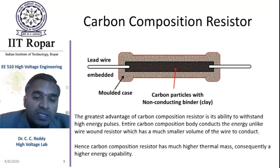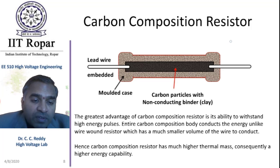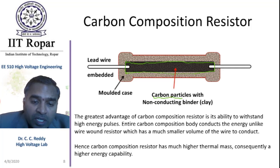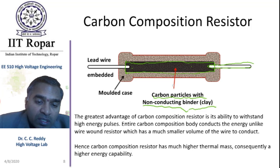Carbon Composition Resistors. This is the cross-sectional view of carbon composition resistors. You can see here there is a core, with carbon particles mixed with a non-conducting binder that is clay. So this is the main portion where the resistance is created. The lead wire is embedded into this core material.